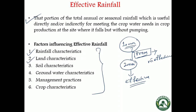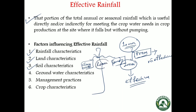Coming to land characteristics, if the surface of the land is undulating, then most of the rainwater will not infiltrate uniformly, so there is much ineffective rainfall and very less effective rainfall. Coming to soil characteristics, if clay soil is there, then runoff will be high, and if sandy soil is there, then percolation loss will be high. So effective rainfall is higher in the case of medium texture soil or loamy soil.